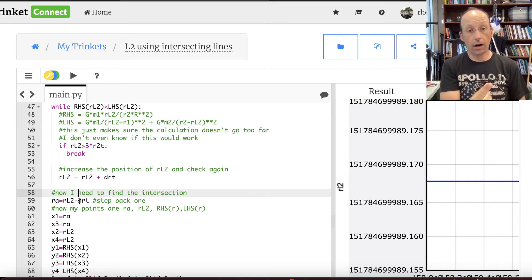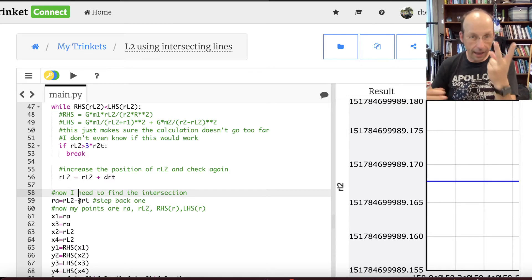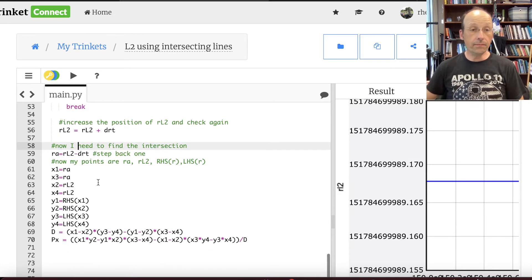So then I have ra and rl2 are my two x values. And then I can just plug those into our RHS function and our LHS function. And then in order to make it look like the Wikipedia page, I just calculated x1, x2, x3. Because I was getting confused in my mind which ones are which. And y1, y2, y3, y4.